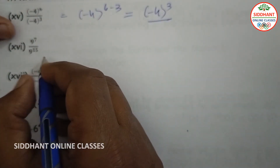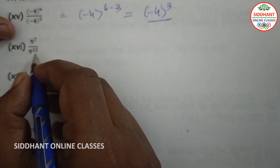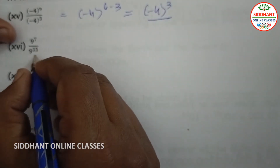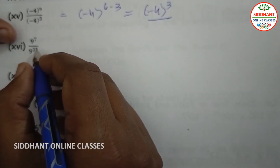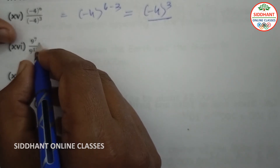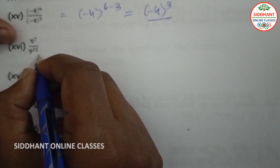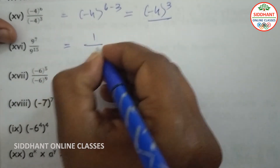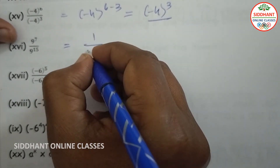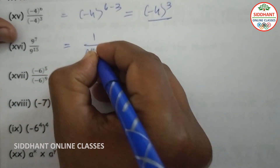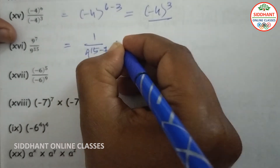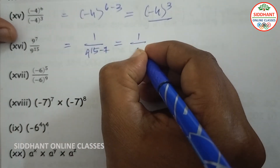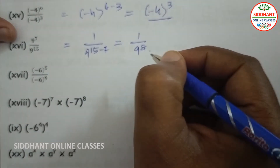Sixteenth one: 9 to the power of 7 divided by 9 to the power of 15. Here the numerator power is less than the denominator power, so we write 1 divided by 9 to the power of 15 minus 7, that will be 1 divided by 9 to the power of 8.